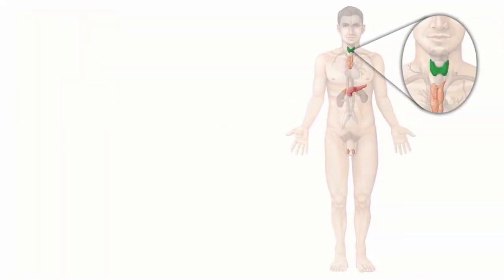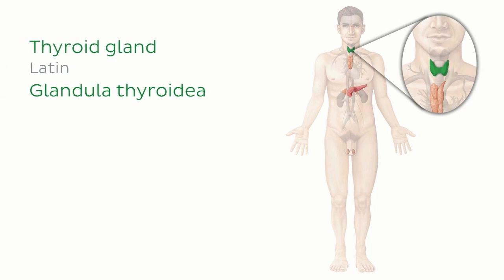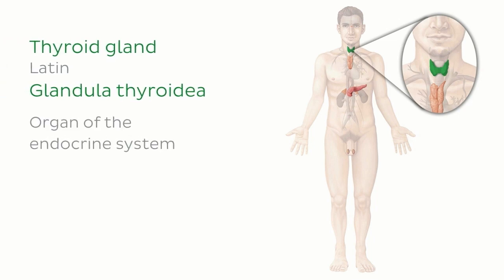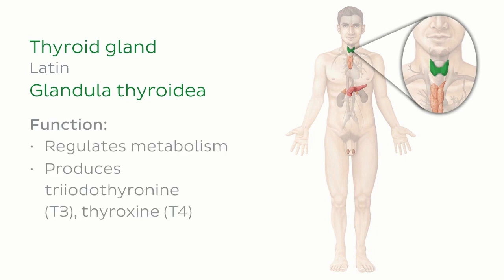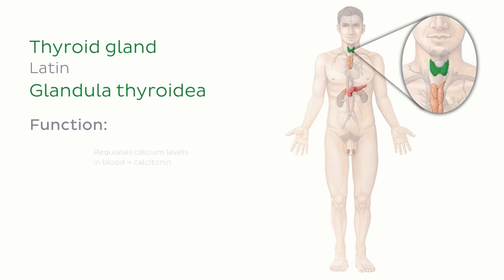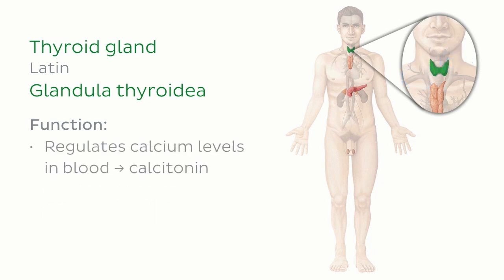What is the thyroid gland? The thyroid gland is an organ that is part of the endocrine system. Its main function is to regulate metabolism throughout the body by producing the hormones triiodothyronine and thyroxine. It also helps to regulate calcium levels in the blood by producing the hormone calcitonin.